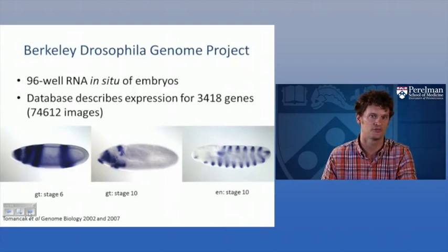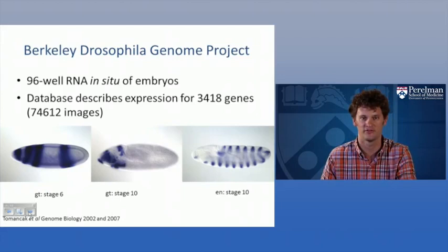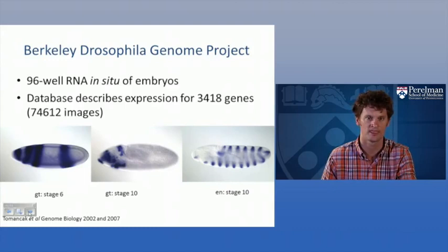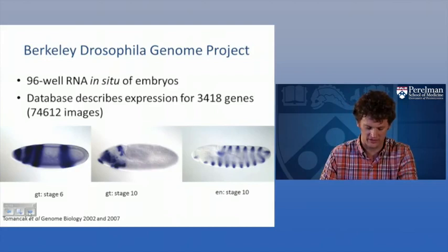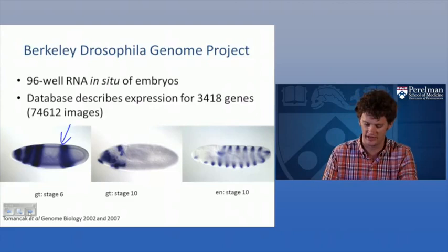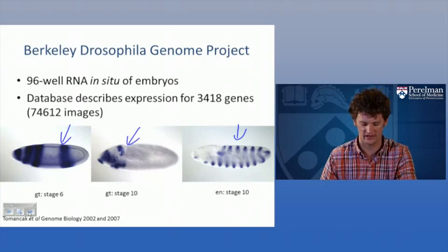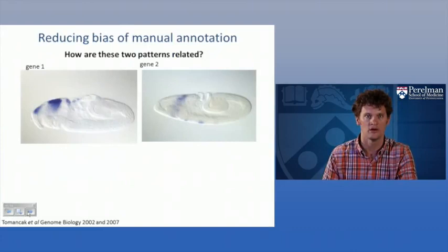The pioneer in this field was the Berkeley Drosophila Genome Project, which started doing in-situ hybridization in 96-well plates for Drosophila, published in two seminal papers in Genome Biology. An important point is that you must look at dynamics: for the giant gene, the in-situ hybridization pattern at stage 6 is very different from stage 10, and other genes like engrailed also have very different patterns at different stages. You have to find some way to combine not just spatial patterns but also temporal patterns, as expression at one stage often differs from another.